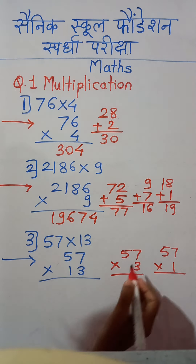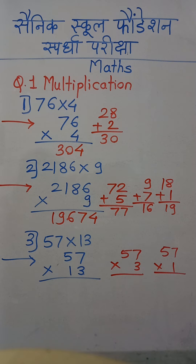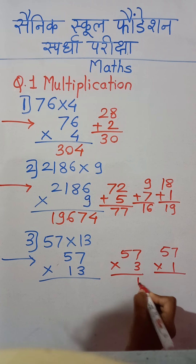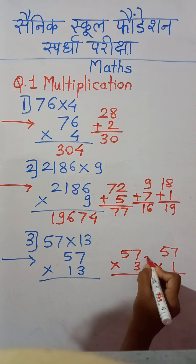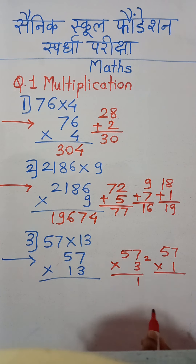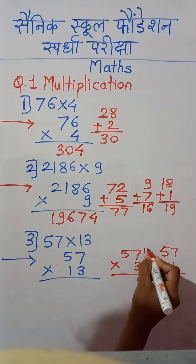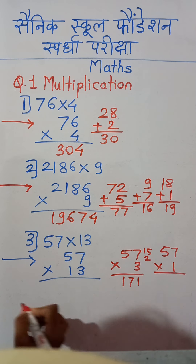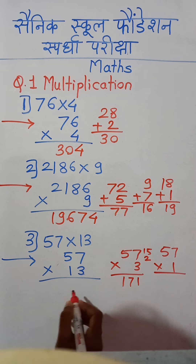First, 57 multiplied by 3: 3 times 7 is 21, so write 1 here and 2 will be carried. Now 3 times 5 is 15, plus 2 is 17. So we are getting 57 multiplied by units place digit 3 equals 171.